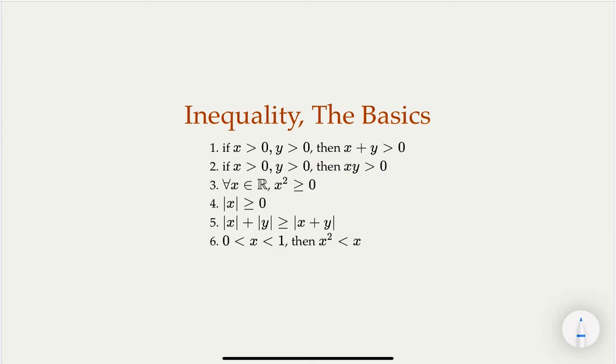When we talk about inequality, sometimes we start with very fundamental properties, which apply to real numbers, because you have the ordering. That only makes sense for real numbers — you can compare which number is bigger, whether a number is positive or negative. Some fundamental properties: positive numbers added together are positive, and positive numbers multiplied together are also positive.